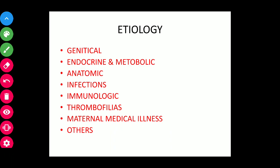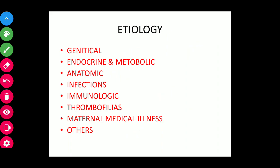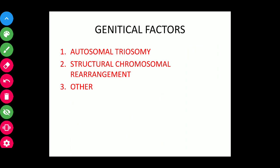There are various factors: genetic, endocrine and metabolic, anatomic, infections, immunological factors, thrombophilias, maternal medical illness, and others. Let's see them one by one. Genetic factors include autosomal trisomy, structural chromosomal rearrangement, and other abnormalities. There is a 50% chance that early miscarriages are due to chromosomal abnormality.